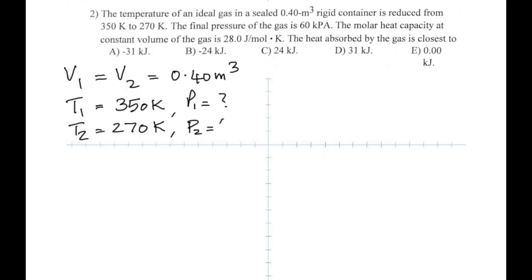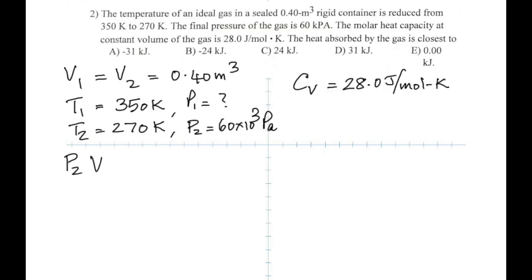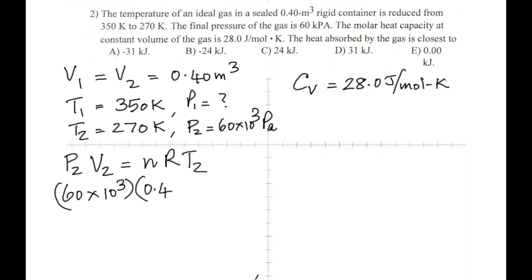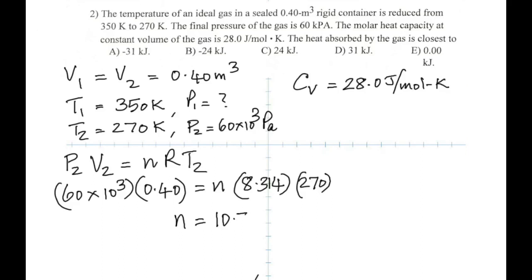The final pressure of the gas is 60 kPa (60 × 10³ Pa) and the molar heat capacity at constant volume is 28.0 J/mol·K. Applying the ideal gas equation at state 2, where we know the pressure and volume, we can find the number of moles of the gas as 10.7 moles.